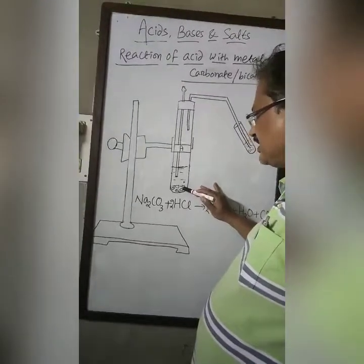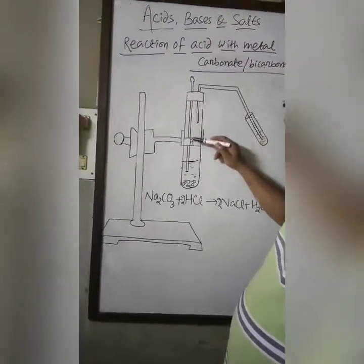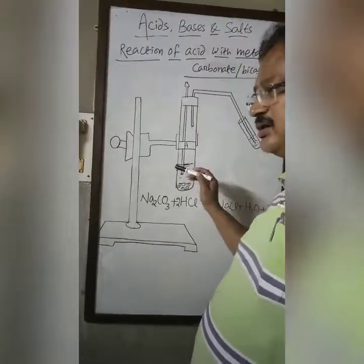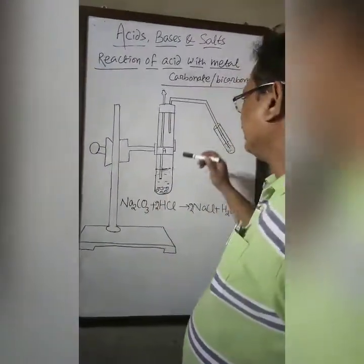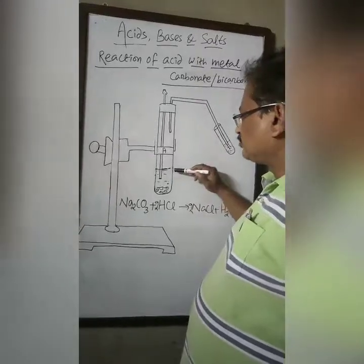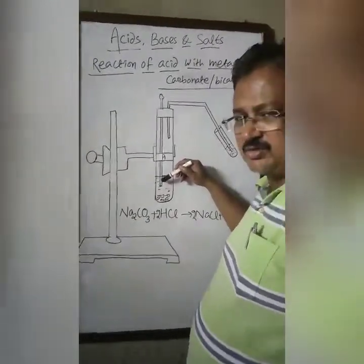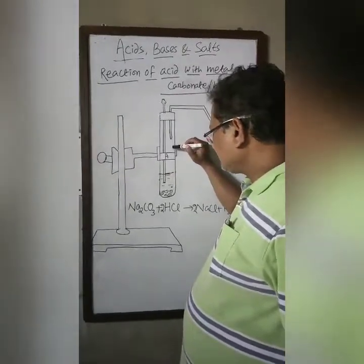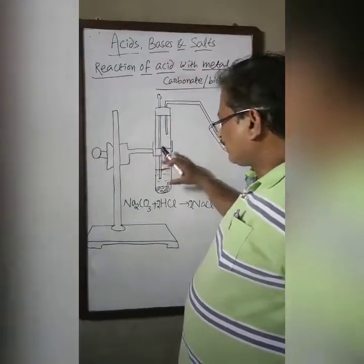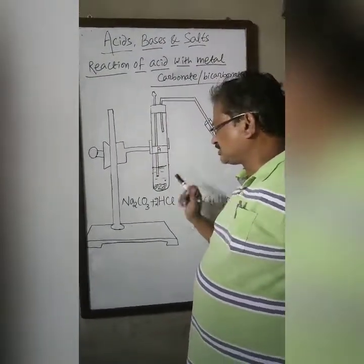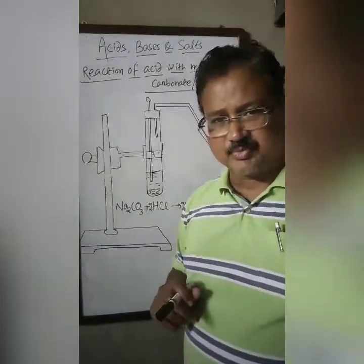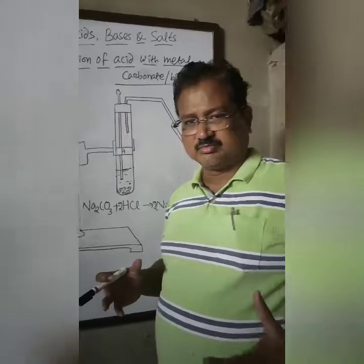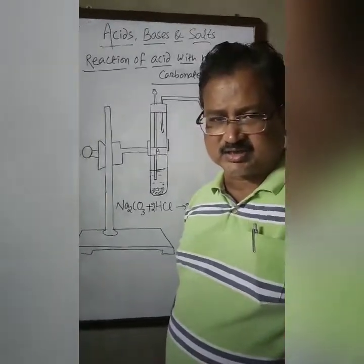The sodium carbonate is taken and through the thistle funnel the acid is added — maybe dilute hydrochloric acid or dilute sulfuric acid. The tube should be immersed to the required extent before the acid is added. After adding the acid to the sodium carbonate, you will find that a brisk reaction — a brisk effervescence — occurs.